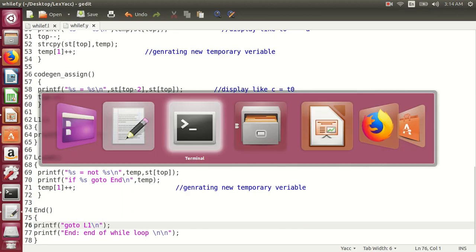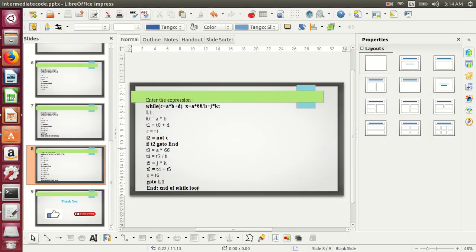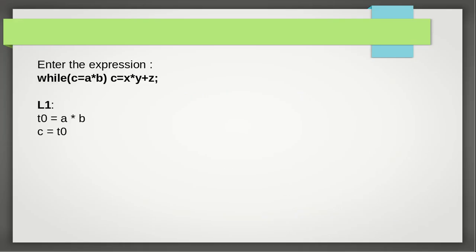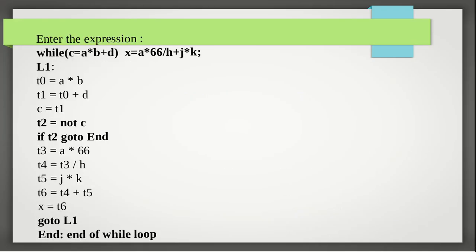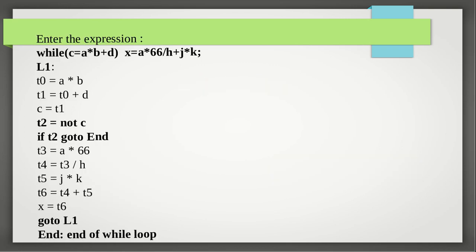And finally we are getting the output. So in this way we can complete our code generation output. This is one example. Again, I have shown here: same way, C is equal to A into B. This is the first code generation, and then the second E and label field. So in this way we can generate the code.